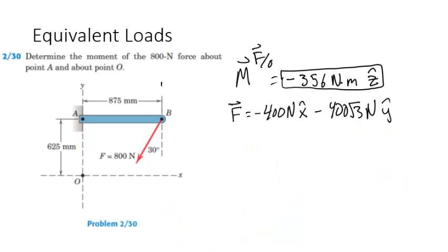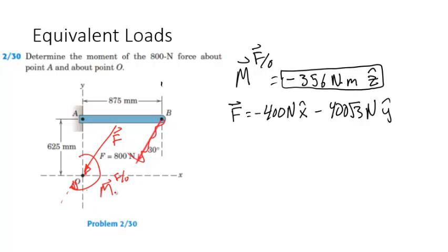Let's revisit a problem we previously solved. We found the moment from force F about O is negative 356 newton-meters in the ẑ direction, and the force in components was negative 400 N x̂ minus 400√3 N ŷ. For an equivalent load if we translate force F from B to O: force F would no longer cause any moment about O since its line of action passes through O, so r × F = 0. To make this an equivalent load, we place the previously calculated moment couple in the system.